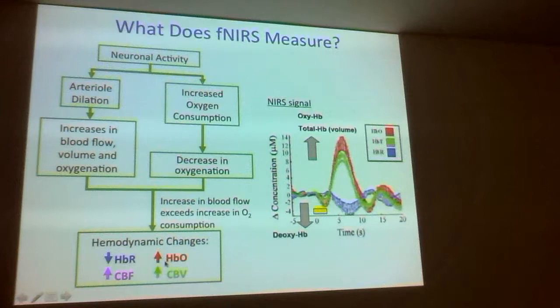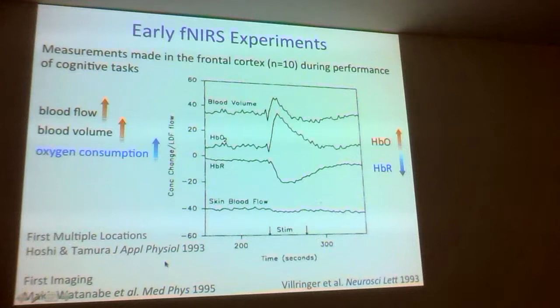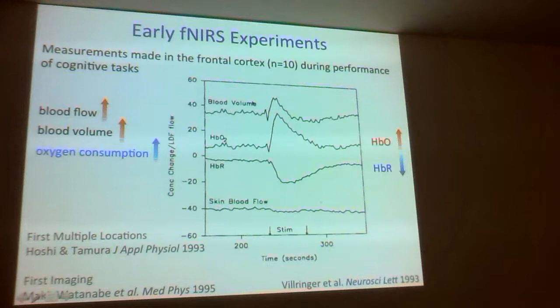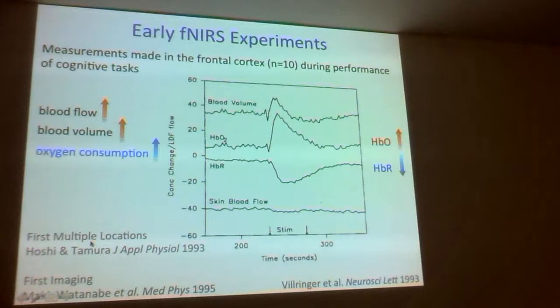In 1993 the first fNIRS experiments were performed. This is data from Villringer's group. They did frontal lobe measurements with a very simple source-detector on the forehead, and the subjects did some cognitive tasks — they just had to think harder. They could see the increase in blood volume and oxyhemoglobin, and that characteristic decrease in deoxyhemoglobin. That same year, groups in Japan did the first multiple location measurements across multiple brain regions.